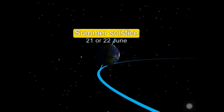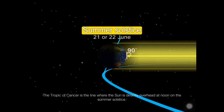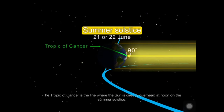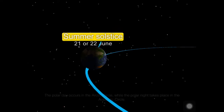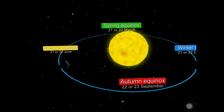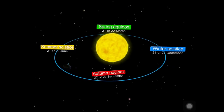The Tropic of Cancer is the line where the Sun is directly overhead at noon on the summer solstice. The polar day occurs in the Arctic Circle, while the polar nights take place in the Antarctic Circle.